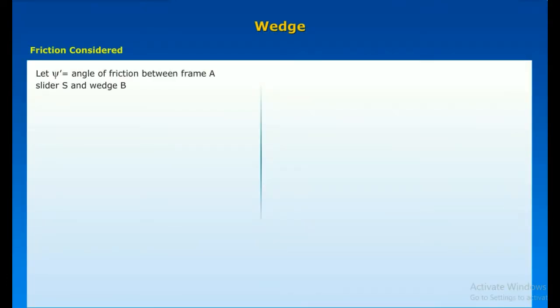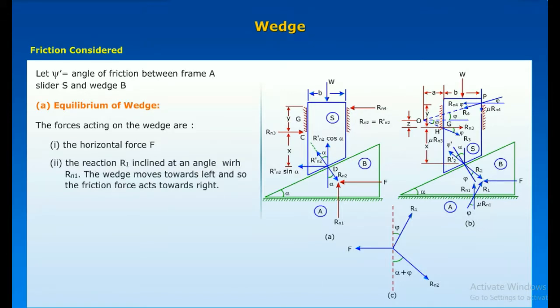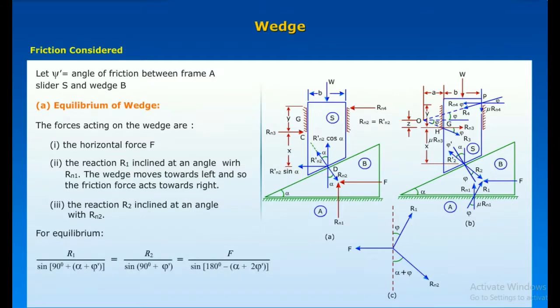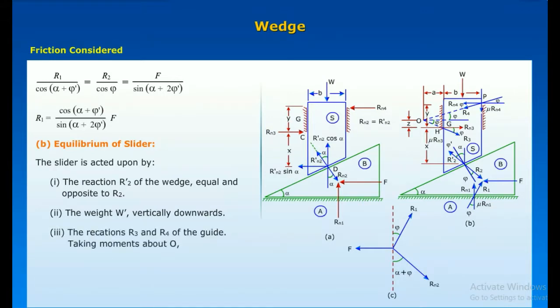Friction considered. Let psi dash is angle of friction between frame A slider S and wedge B. This is also explained with equilibrium of wedge and equilibrium of slider. The forces acting on the wedge are the horizontal force F, the reaction R1 inclined at an angle psi dash with Rn1. The wedge moves towards left and so the friction force acts towards right. The reaction R2 inclined at an angle psi dash with Rn2. For equilibrium. Equilibrium of slider. The slider is acted upon by the reaction R2 dash of the wedge equal and opposite to R2, the weight W dash vertically downwards, and the reactions R3 and R4 of the guide. Taking moments about O.